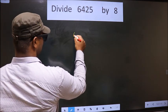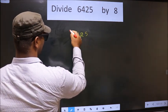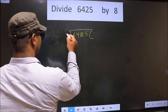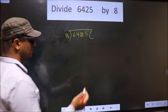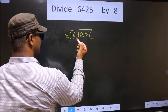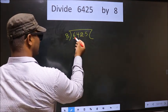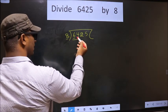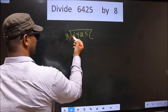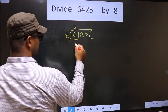That is 6425, 8 here. Here we have 6, here 8. 6 is smaller than 8, so we take two numbers, that is 64. When do we get 64 in 8 table? 8 times 8 is 64.